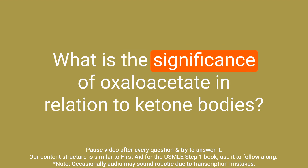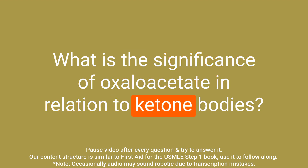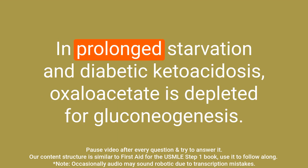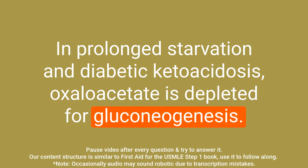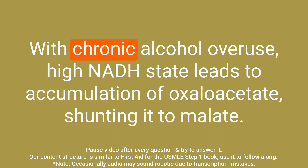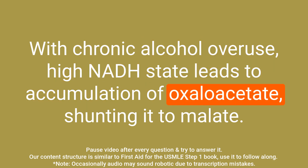Question: What is the significance of oxaloacetate in relation to ketone bodies? Answer: In prolonged starvation and diabetic ketoacidosis, oxaloacetate is depleted for gluconeogenesis. With chronic alcohol overuse, a high NADH state leads to accumulation of oxaloacetate, shunting it to malate.